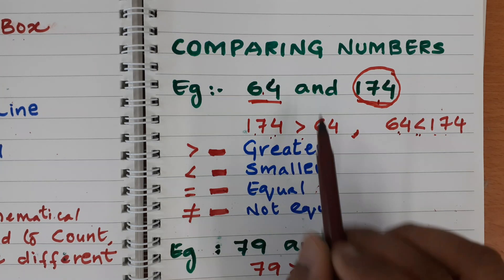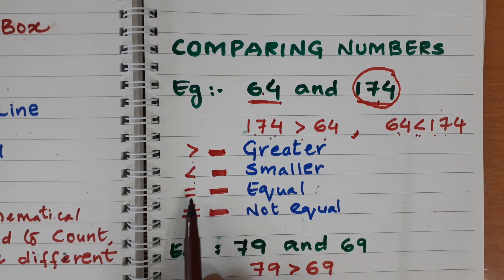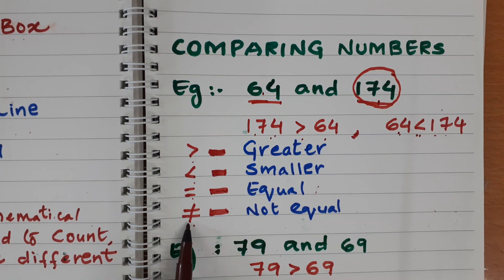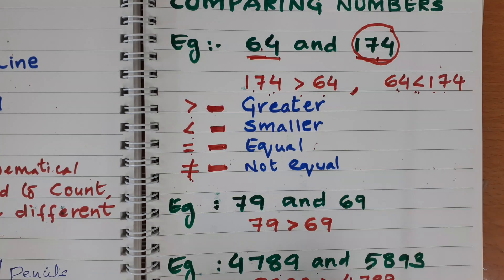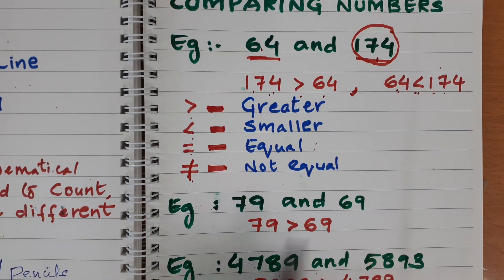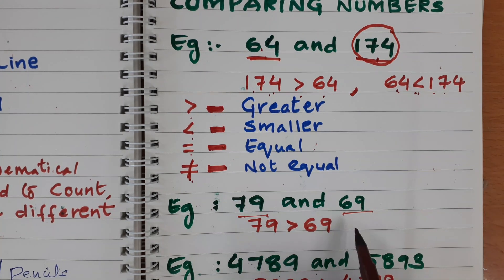These are some symbols we have to use while we are comparing numbers. Greater symbol, smaller, equal. This is not equal. This not equal symbol. Just put the cross mark here on the equal sign. Let us take next example, 79 and 69. So here two digits, here also two digits.